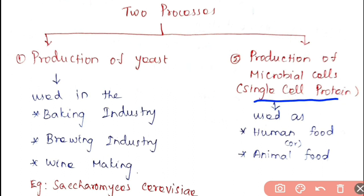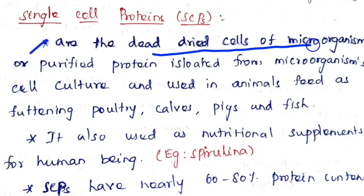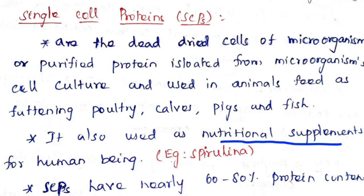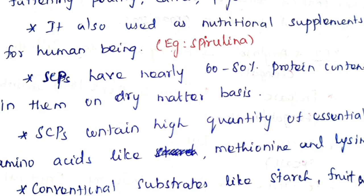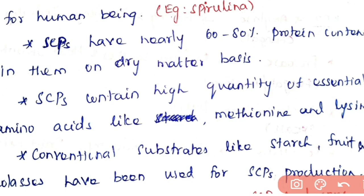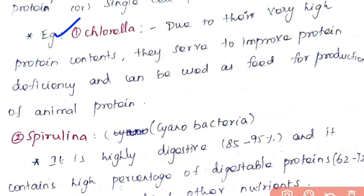Single cell proteins are the dead dried cells of microorganisms, or purified protein isolated from microorganism cell culture. They are used as animal feed for fattening poultry, cows, pigs, and fish, and as nutritional supplements for human beings. An example is spirulina. Single cell proteins have nearly 60 to 80 percent protein content on a dry matter basis and contain high quantities of essential amino acids like methionine and lysine. They are produced using conventional substrates like starch, fruit waste, and molasses.